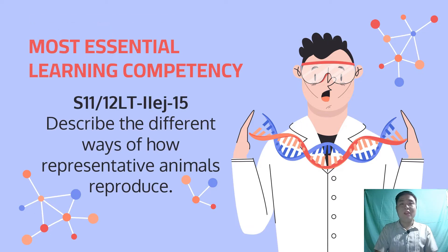With the help of this video lesson, learners are expected to describe the different ways of how representative animals reproduce. So this is our most essential learning competency that you learners needed to acquire as you go on in this video lesson. So let us proceed with our discussion.